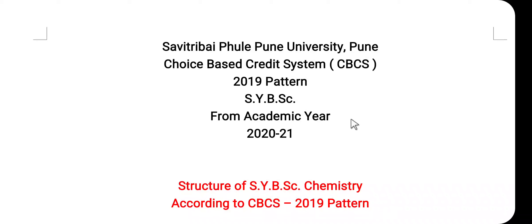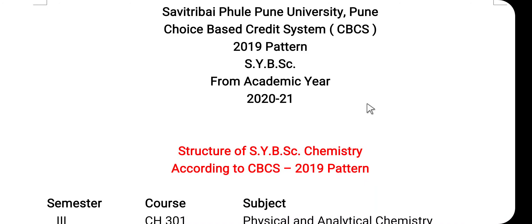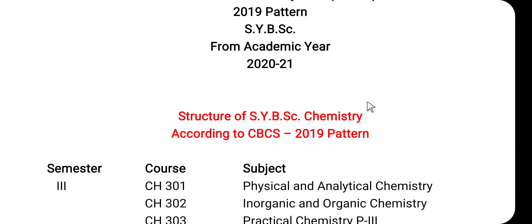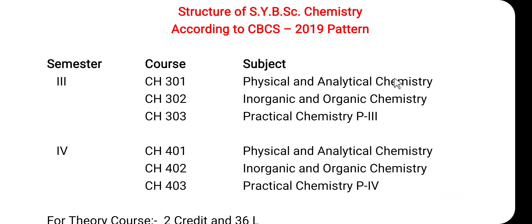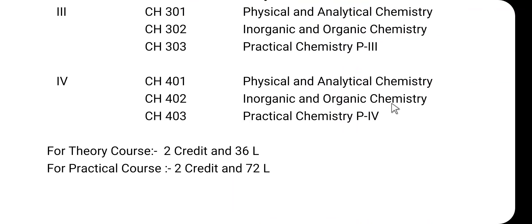All of you know that the syllabus of the SYBC is changed from this academic year and it is Choice Based Credit System — in short, it is called the CBCS pattern. When we consider the structure of SYBC Chemistry according to the CBCS 2019 pattern, there are two semesters: Semester Third and Semester Fourth. For each semester, there are two theory courses and one practical course. The first theory course is Physical and Analytical Chemistry, and the second is Inorganic and Organic Chemistry. For the theory course, there are two credits and 36 lectures; for the practical course, there are two credits and 72 lectures.